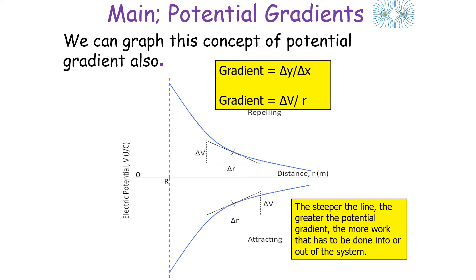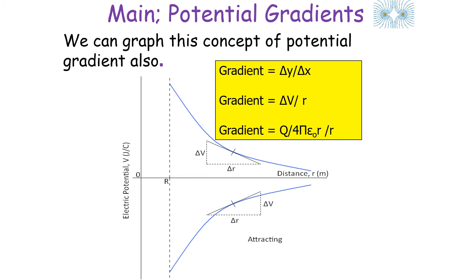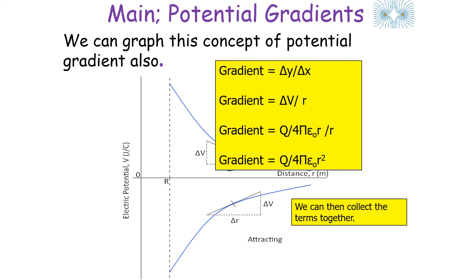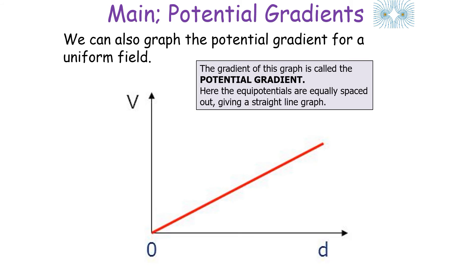Because the gradient is the change in Y over the change in X, the gradient in this example is the potential difference divided by the change in distance. Substituting in the equation for potential — potential difference equals Q over 4πε₀R — and dividing by R, we get Q over 4πε₀R². We've seen this equation before: it's the equation for electrical field strength. So this tells us that the potential gradient, the change in electrical potential difference with respect to distance, is the same quantity as the electrical field strength.